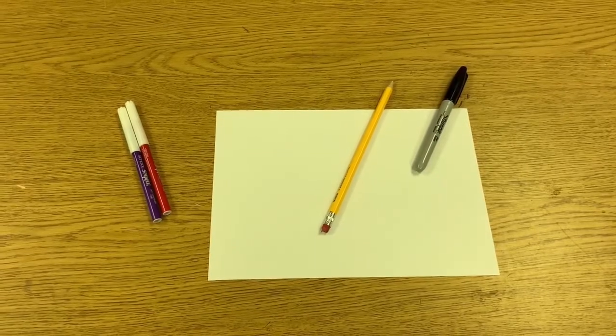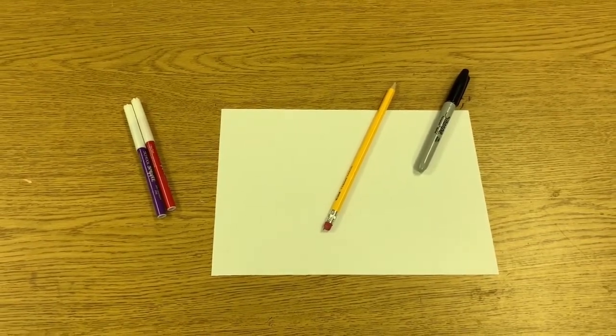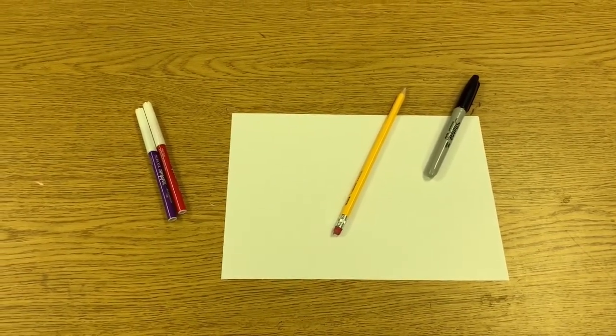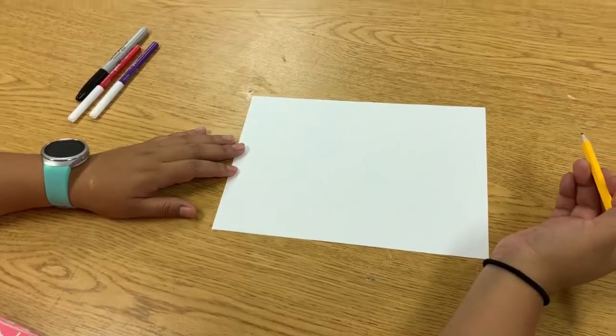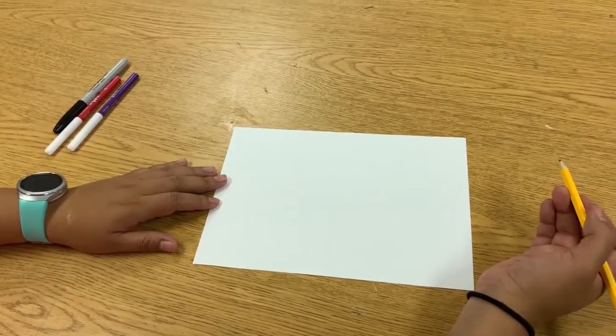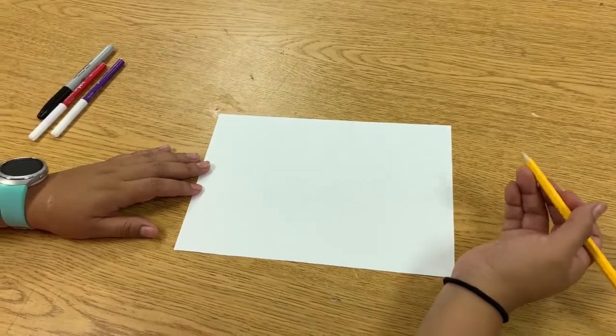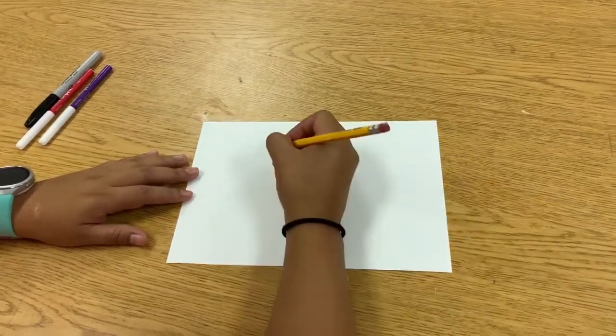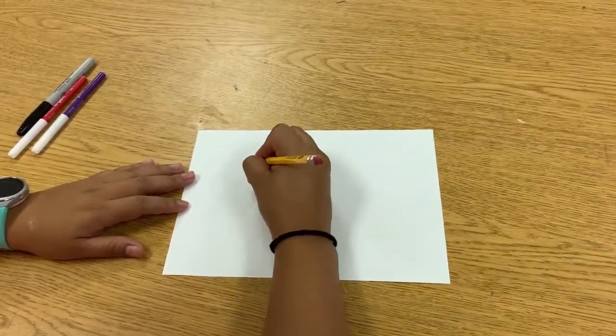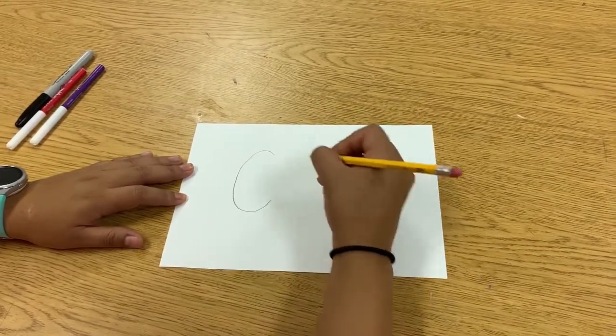A piece of paper, a pencil, a black permanent marker, and some colored markers. The first thing that we're going to do is write our name. I'm going to write Kat because that's what my family and friends call me. So you're just going to write it the way that you normally write it.